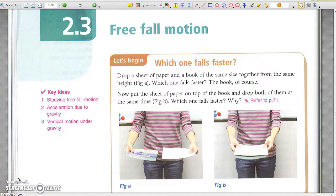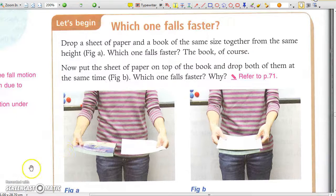2.3 Free Fall Motion. A sheet of paper usually falls slowly, but it will certainly surprise many people when a sheet of paper placed over a book falls at the same rate as the book.